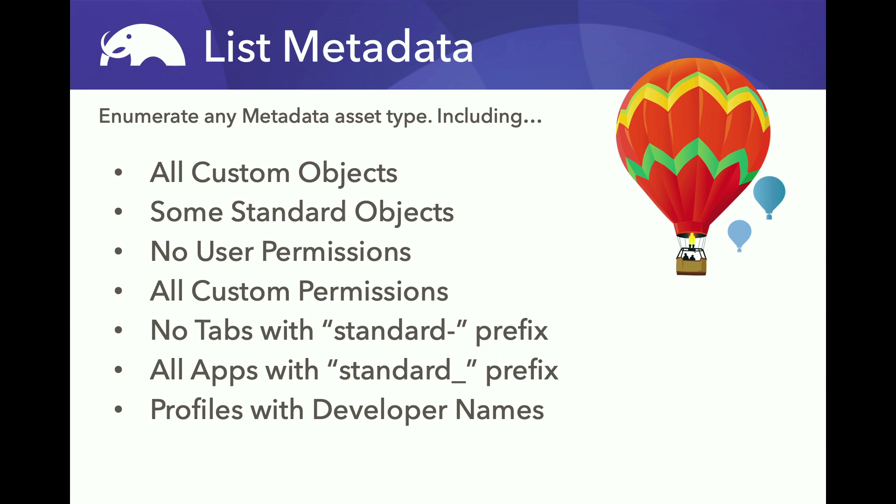List metadata will give you all of your custom apps with the standard underscore prefix. And lastly, it'll give you profiles, permission sets, and other things like that. In this case, profiles will have the developer names — they won't have the names shown in the Salesforce HTML interface. So if you want to match up profile names that metadata list returns with the regular names, you need to do that through the data API and through the ID of the profile. That's list metadata.